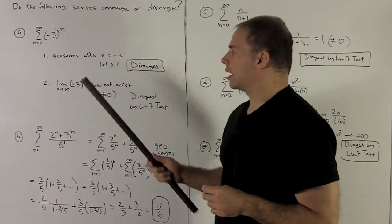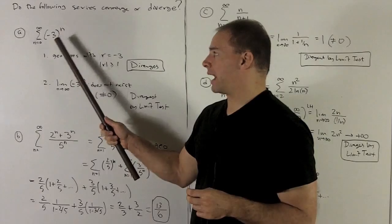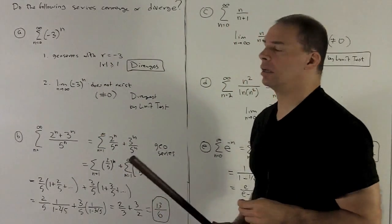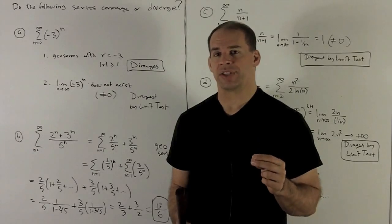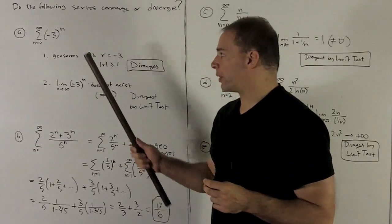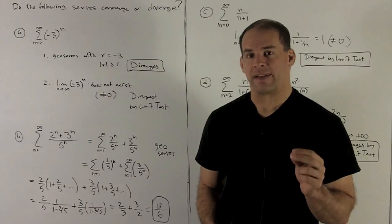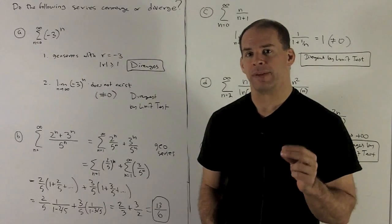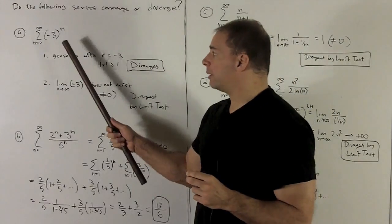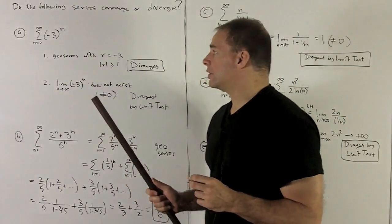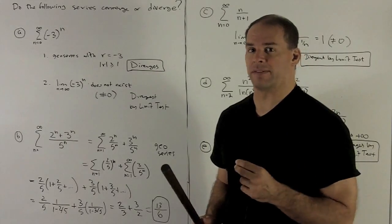For our first case, take the series sum from n equals 0 to infinity of (-3) to the nth power. We can recognize this as a geometric series with r equal to -3. The rule for geometric series is they diverge if the absolute value of r is greater than or equal to 1. Here our r is -3, so the absolute value is 3, which is bigger than or equal to 1, so this has to diverge.